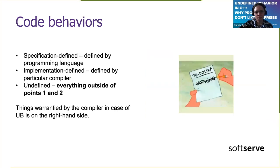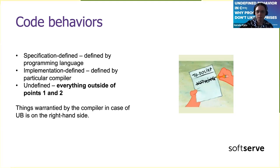There are several code behaviors defined by the C standard. Code behavior can be defined either by the specification of the programming language — mostly some C standard — or it may be defined by implementation, where the standard gives brief hints and how it's done exactly depends on the compiler. Everything not defined by these two is considered undefined behavior.